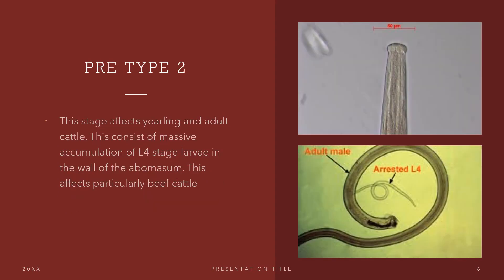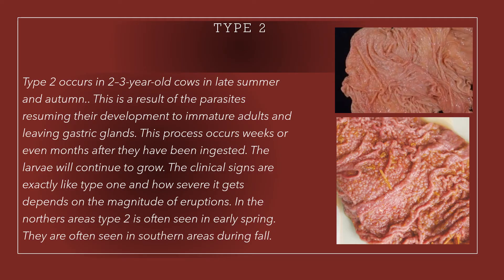Now let's talk about Pre-Type 2. This stage affects yearling and adult cattle. This consists of massive accumulation of L4 stage larvae in the wall of the abomasum. This affects particularly beef cattle. Now let's talk about the actual Type 2, which is the most severe. Type 2 occurs in two to three-year-old cows in late summer and autumn. This is a result of the parasites resuming their development to immature adults and leaving the gastric glands. This process occurs weeks or even months after they have been ingested.